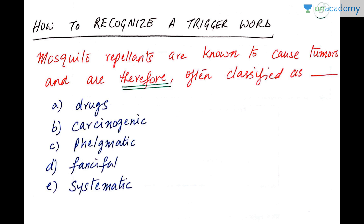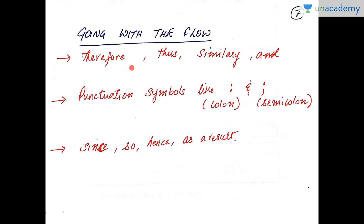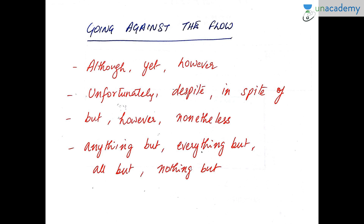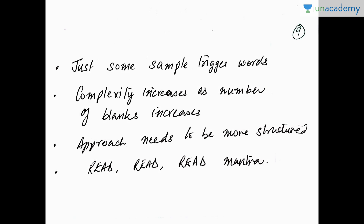The trigger word in that sentence was 'therefore' — it told us the direction the sentence was moving. There are words that go with the flow, such as 'therefore', 'thus', and punctuation symbols like the colon and semicolon, and words like 'since' and 'so'. Take a screenshot of this and save it for future reference. Similarly, there are words that go against the flow, like 'although', 'yet', 'unfortunately' — they signal that something was going to happen but didn't. So they indicate a reversal. Save these for future use.